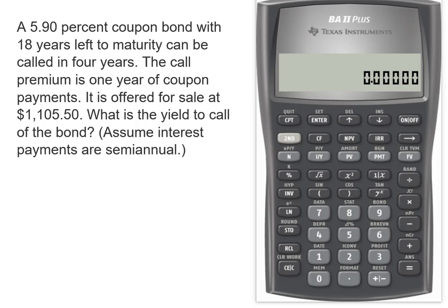We can use our time value of money keys on the calculator, but we have to do a little bit of calculation and work first. The first thing we have to work on is determining the number of periods — our value for N. We've got four years left, but we're semi-annual, so we're going to use an N of 8.